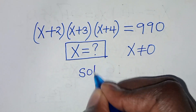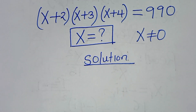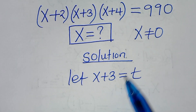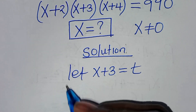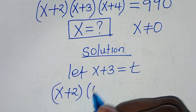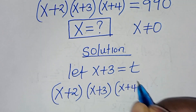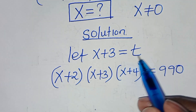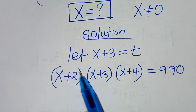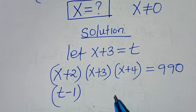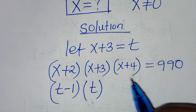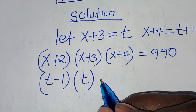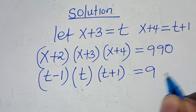The first step is to let x + 3 be equal to t. So we have (x + 2)(x + 3)(x + 4) = 990. If x + 3 = t, then x + 2 is the same as t − 1, x + 3 is t, and x + 4 is the same as t + 1. So we have (t − 1) · t · (t + 1) = 990.